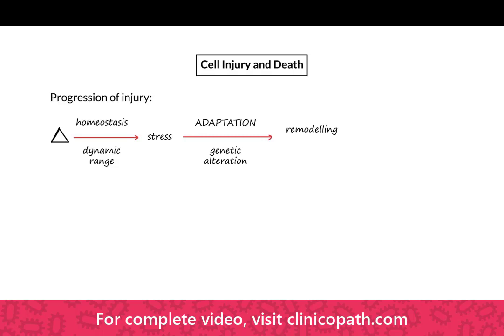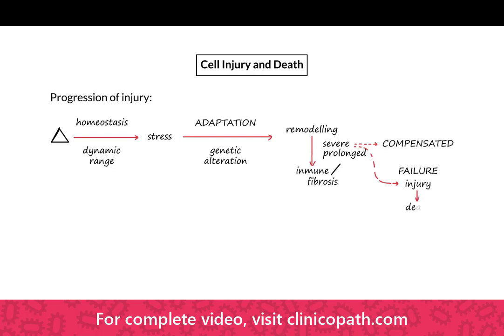But if this remodeling proves insufficient — because the stress is either really severe or very prolonged — then there is almost invariable involvement of the immune system, and with the immune system, fibrosis. We can see there's a range of response for the organ: it can either have adequate compensation to maintain function, or there will be inadequate compensation, progression of disease, and the organ will go into failure. This failure then will go from cell injury to cell death.